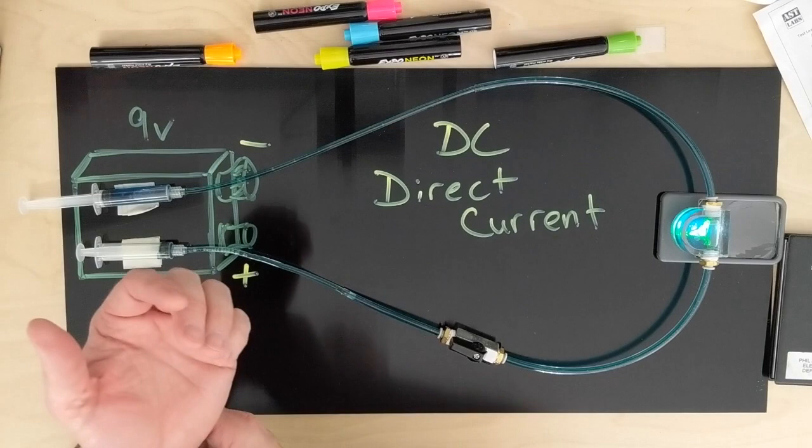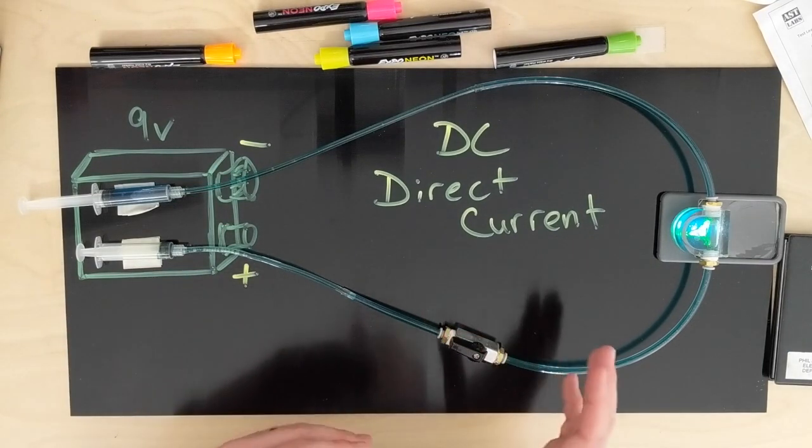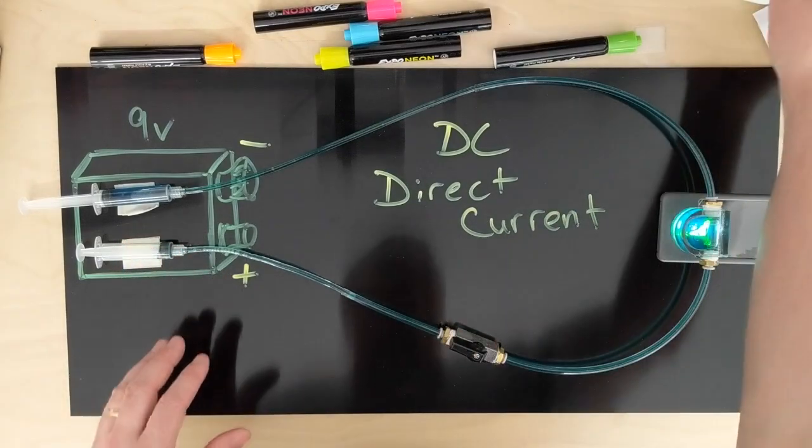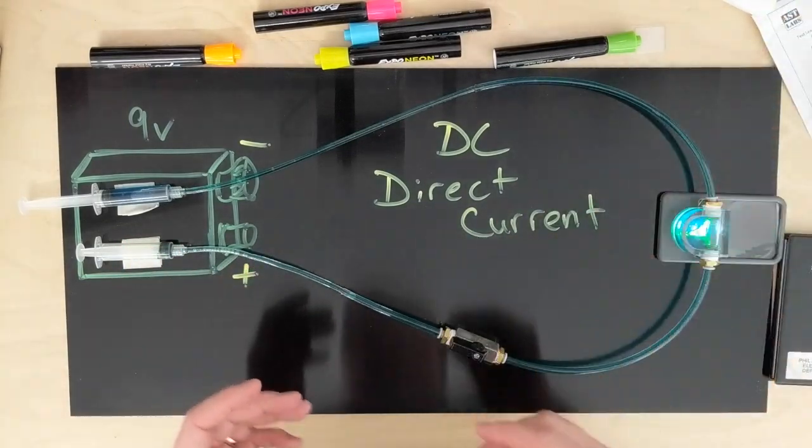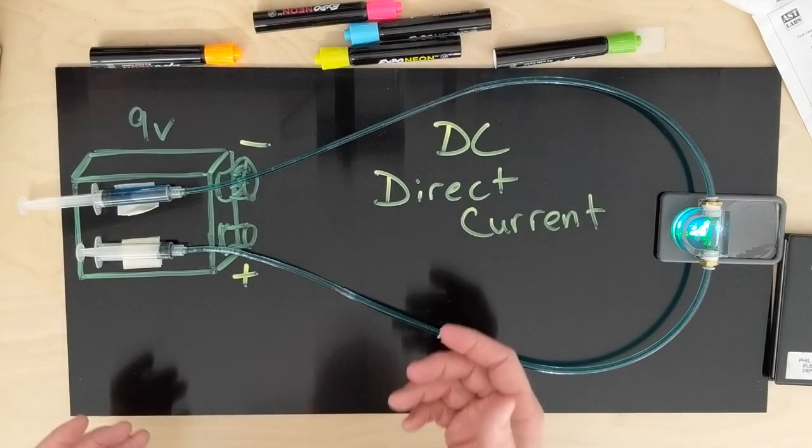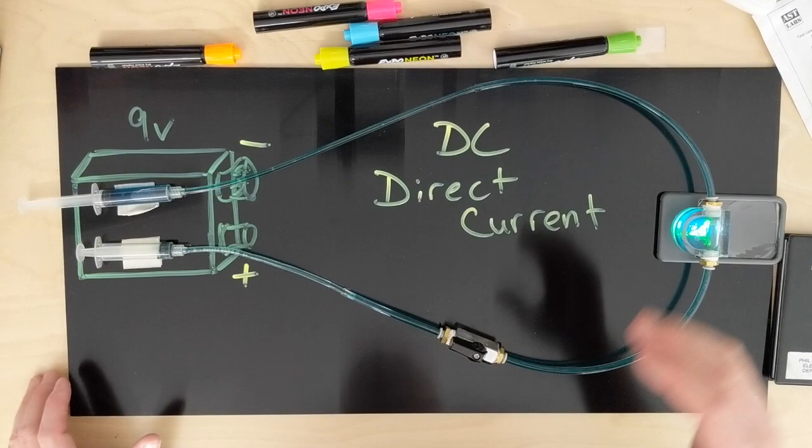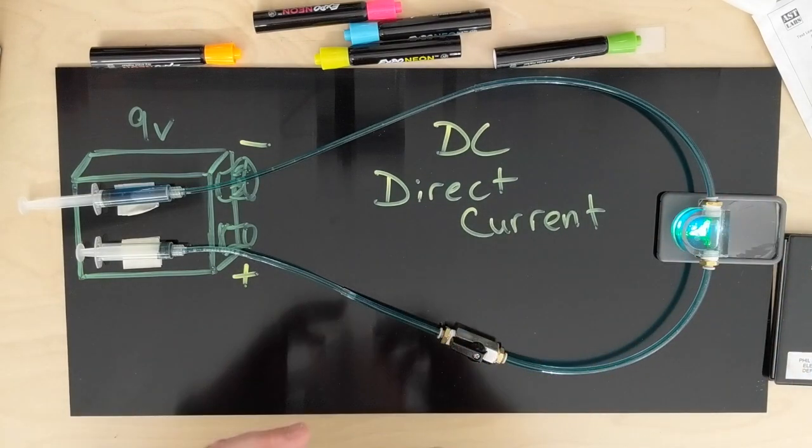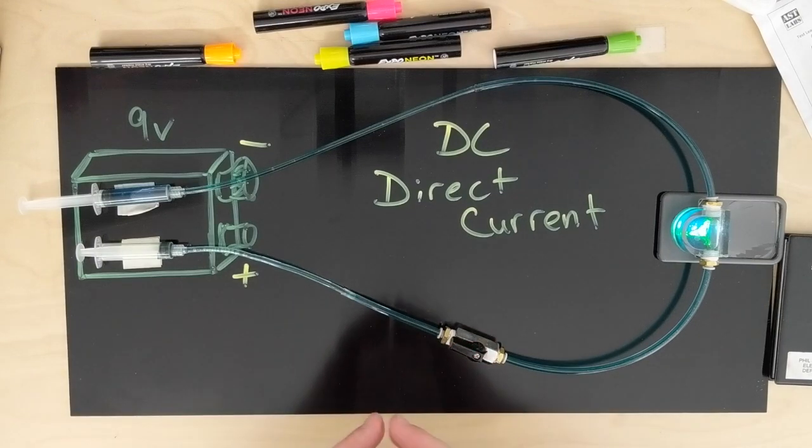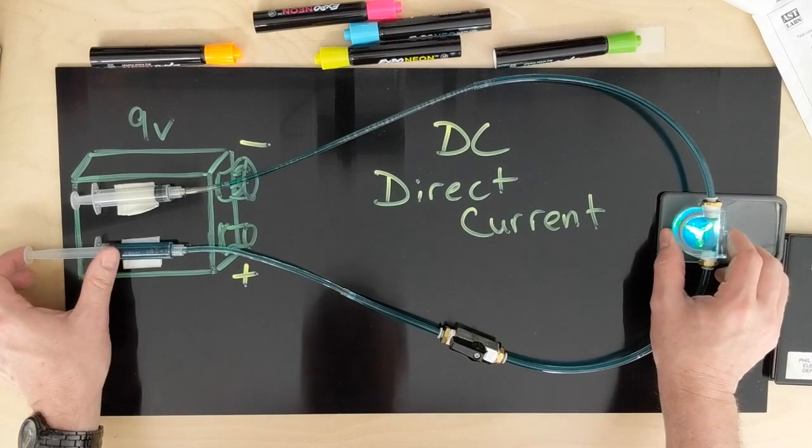Today we're going to take a look at AC and DC. DC meaning typically from batteries, could even be a rechargeable battery, can be from my power supply that sits on the bench here because it's taking AC and making DC. But when we talk about DC or direct current, we're just talking about a flow in one direction.